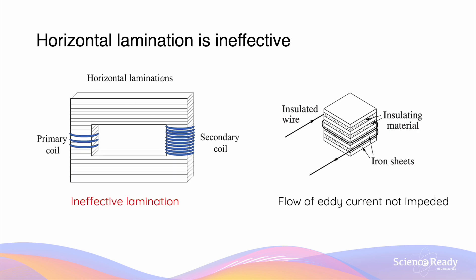In contrast, horizontal lamination — where the iron core is cut horizontally into thin slices — is not as effective. When eddy currents are induced in a circular manner, they flow in the same plane as the horizontal slices, so cutting the iron core horizontally does not prevent or hinder the flow of eddy current. Therefore, horizontal lamination is ineffective because the flow of eddy current is not impeded, unlike with vertical lamination.